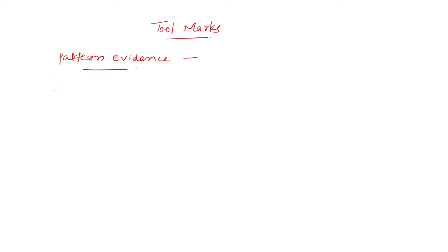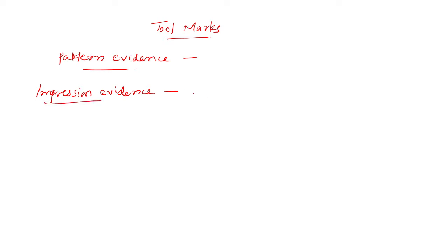Before that, what is an impression evidence? Objects or materials that have retained the characteristics of other objects or materials through direct physical contact — those objects are called impression evidences. Same as pattern evidence, we will call this as impression evidence also.